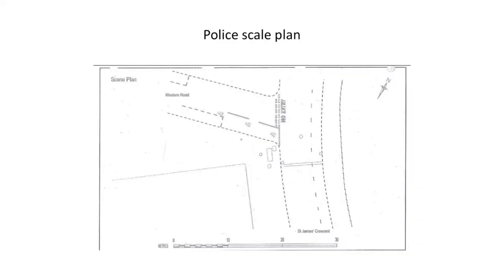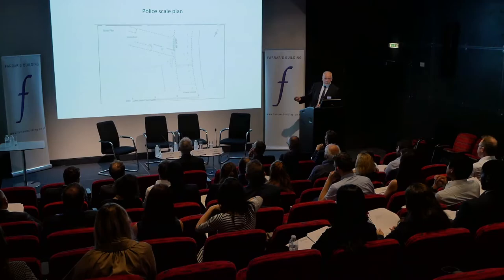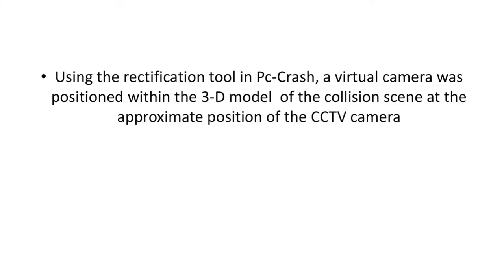Included in the papers was the police scale plan of the incident. The Renault drove along here and turned, and the pedestrian crossed approximately in this area. Using the rectification tool within PC Crash, a virtual camera was positioned within the 3D model of the collision scene at the approximate position of the CCTV camera.